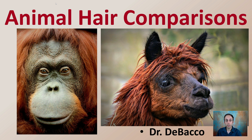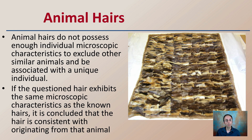Welcome to Tobacco University. Here we're going to be investigating animal hair comparisons. While we can see some obvious differences at the macroscopic level, we're going to be looking more at the microscopic comparisons of different animal hairs from different animals as well as within the same animal. Animal hairs in general do not possess enough individual microscopic characteristics to exclude other similar animals and can be associated with a unique individual, so we're just generally classifying them.